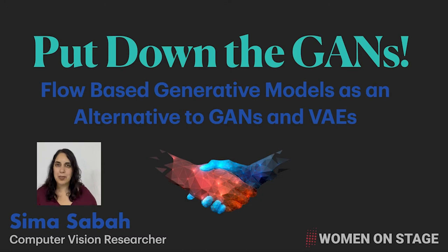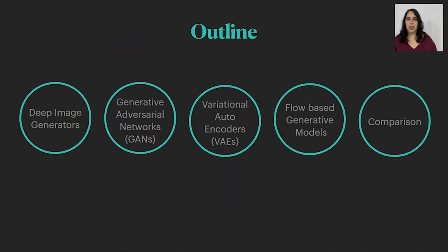This is exactly what happened when I first heard about flow-based generative models, which apparently have been around for a while, but most people I know haven't heard about them. The purpose of this talk is to change that and get you to appreciate them as much as I do. We will start the talk by presenting the problem deep image generators are facing, then we will go over the main idea of each of the three main families of image generators and we'll finish by a comparison between them.